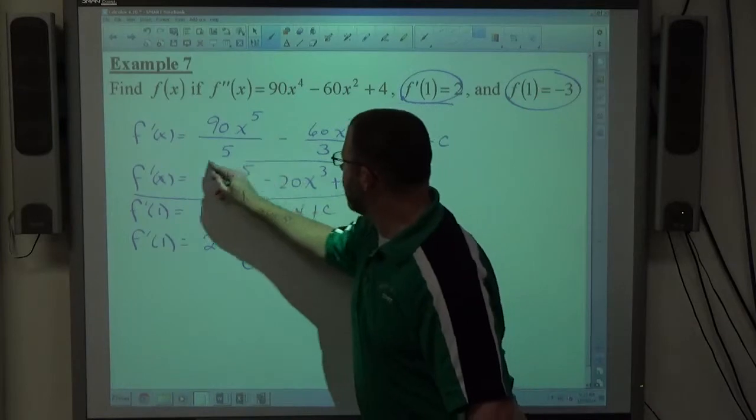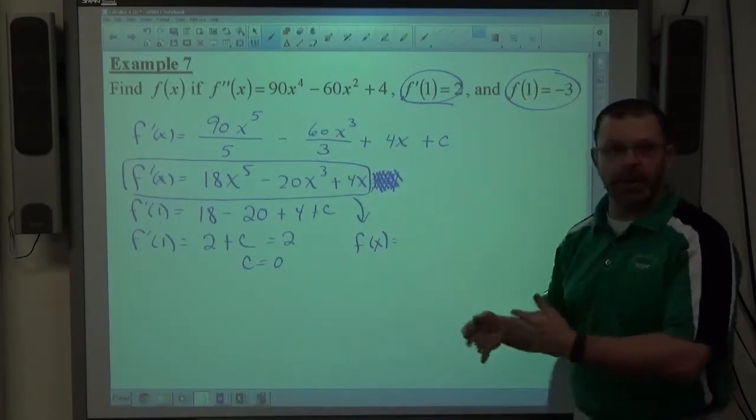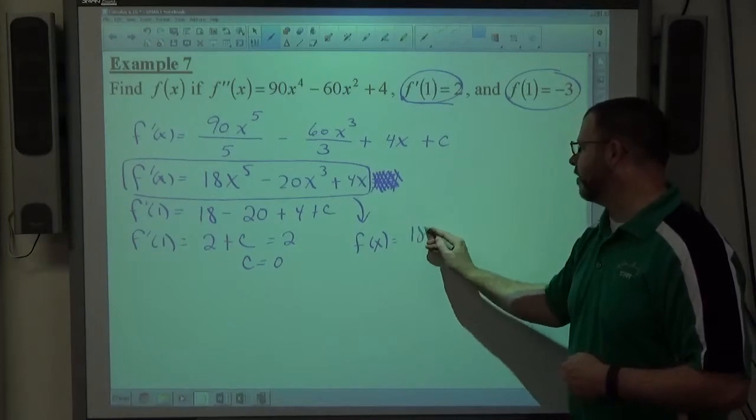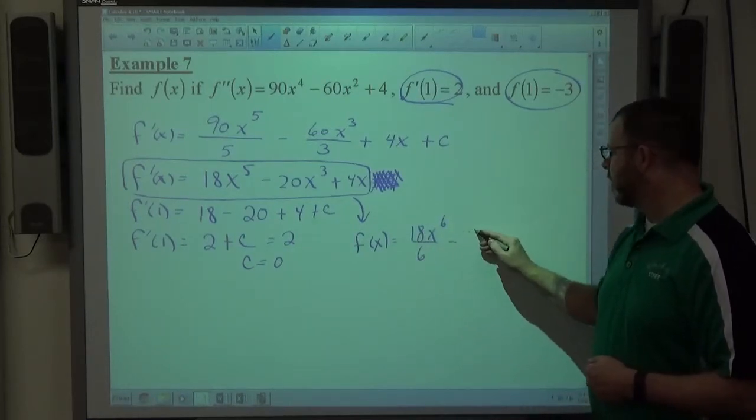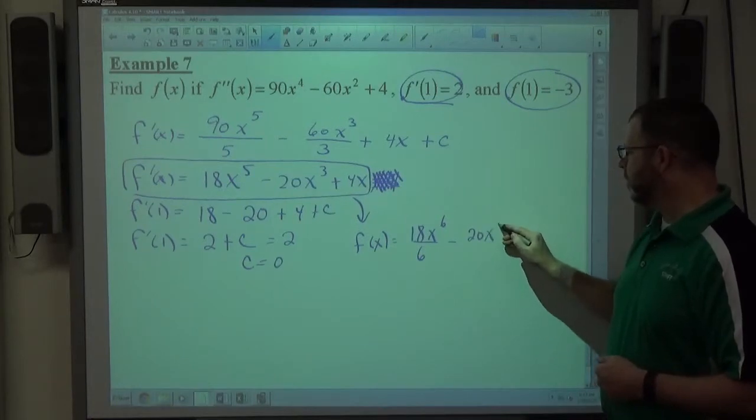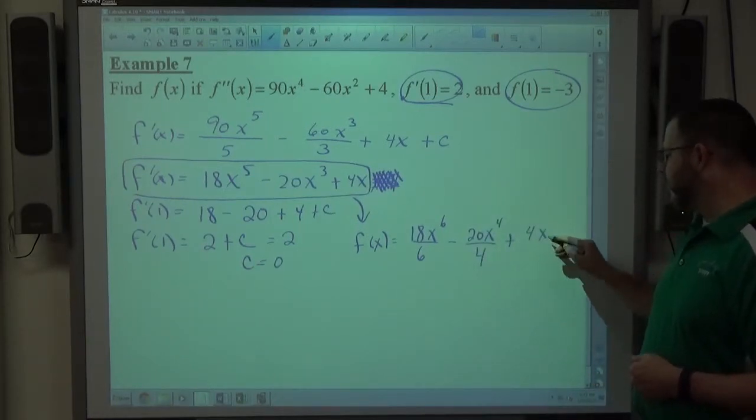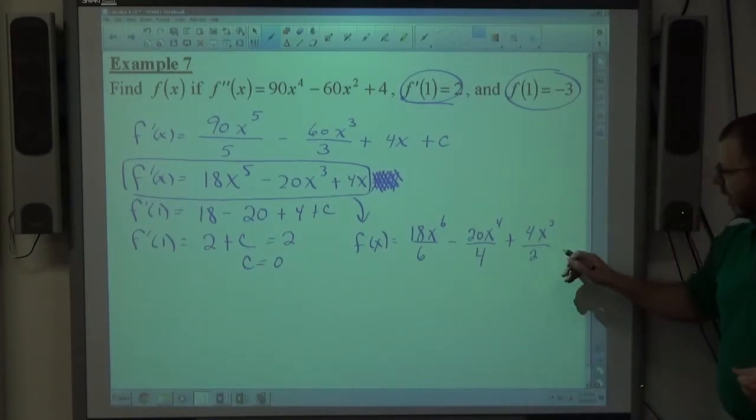So if I want to then go to f of x, I simply have to anti-differentiate each term. They're polynomial functions. I use the polynomial anti-differentiation rule, which is the constant stays as is. We increase the power by 1 divided by the new power. The constant stays as is. We increase the power by 1 divided by the new power. The constant stays as is. We increase the power by 1 divided by the new power. And then we account for a constant.